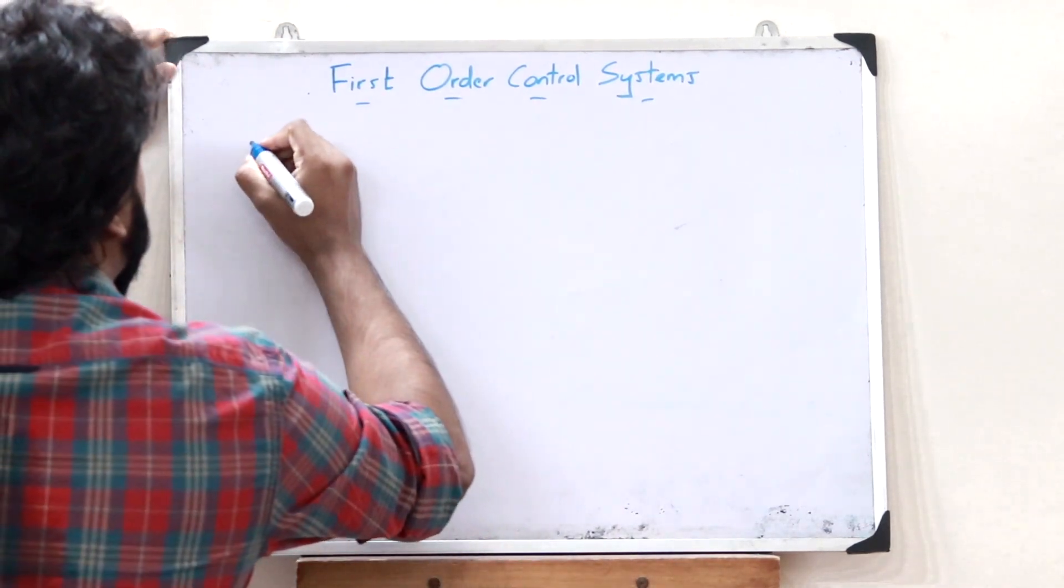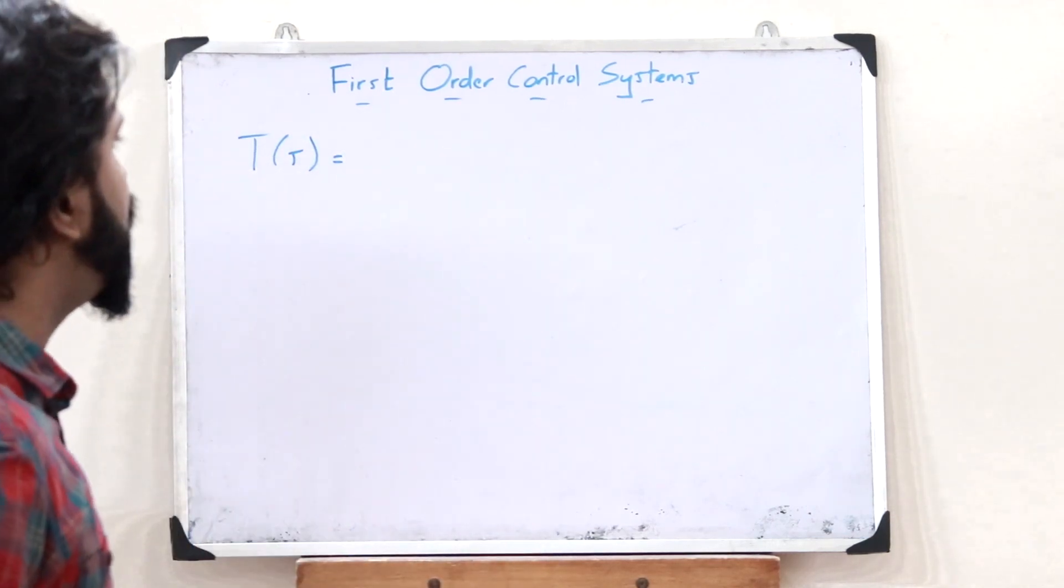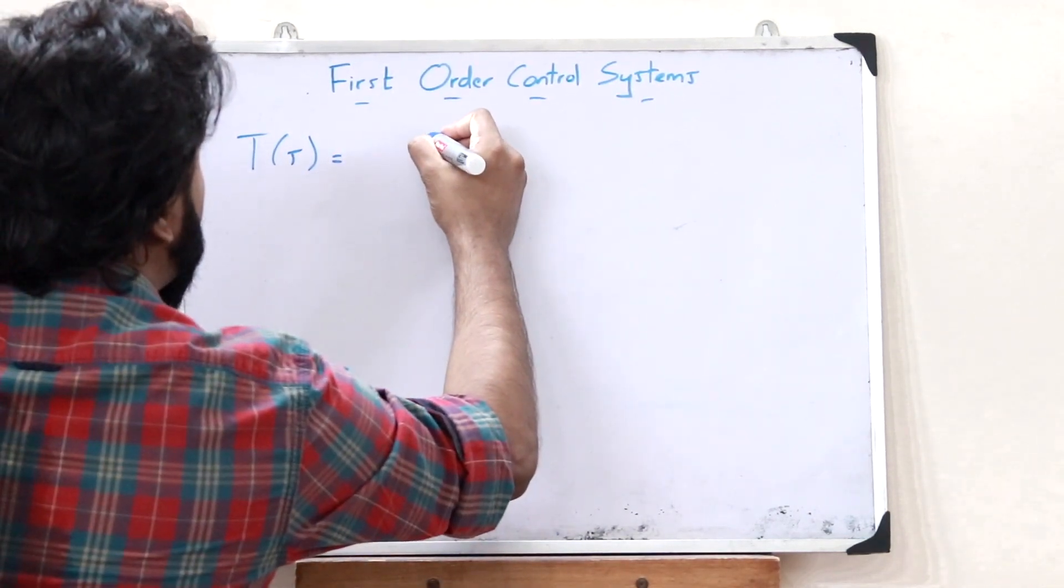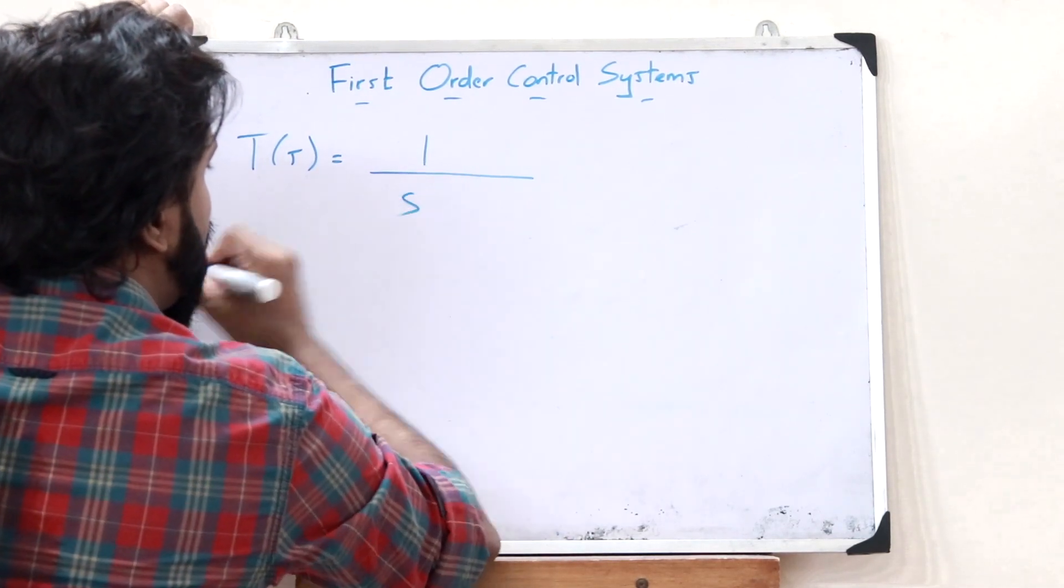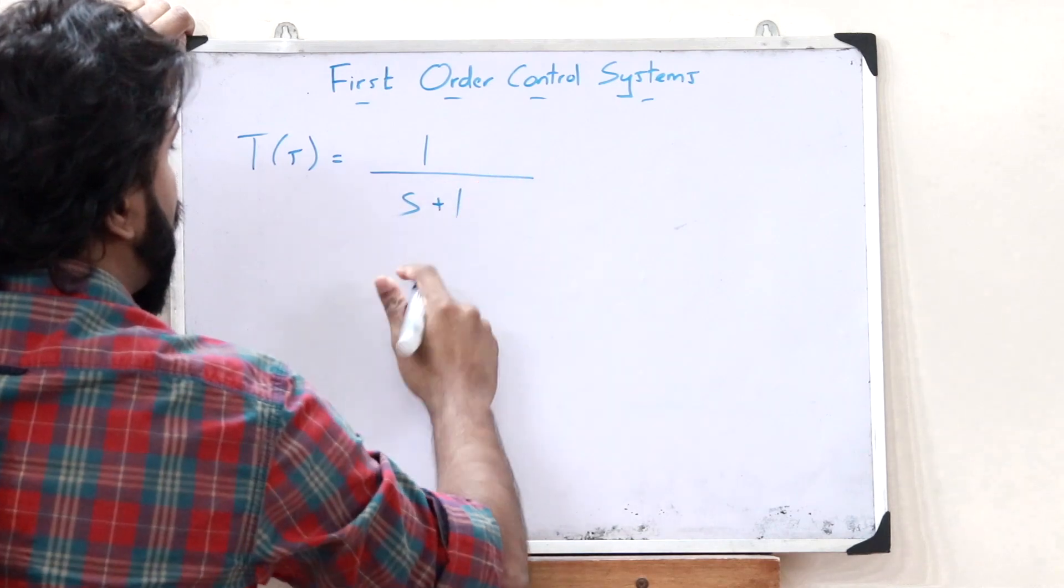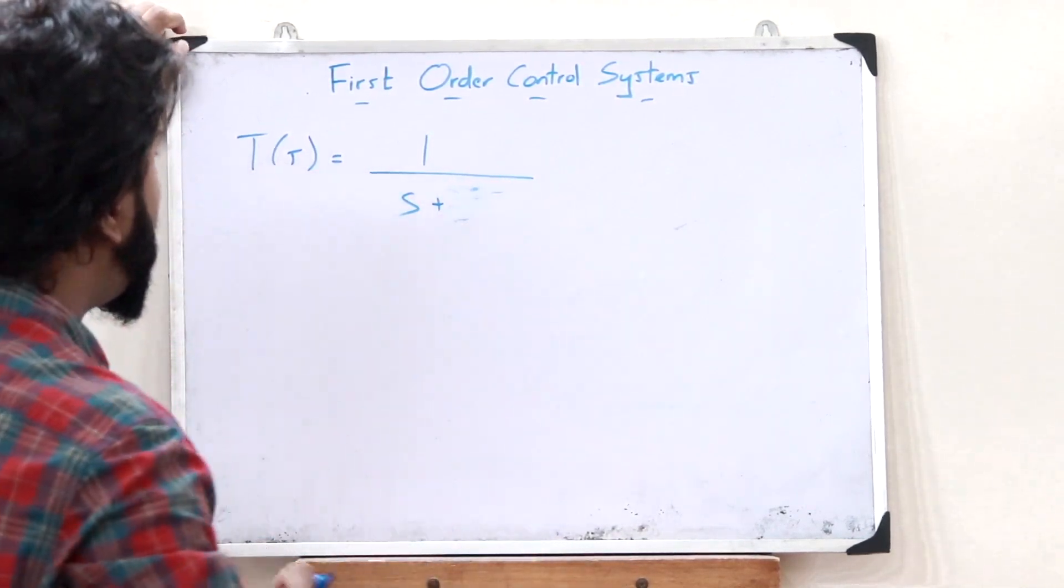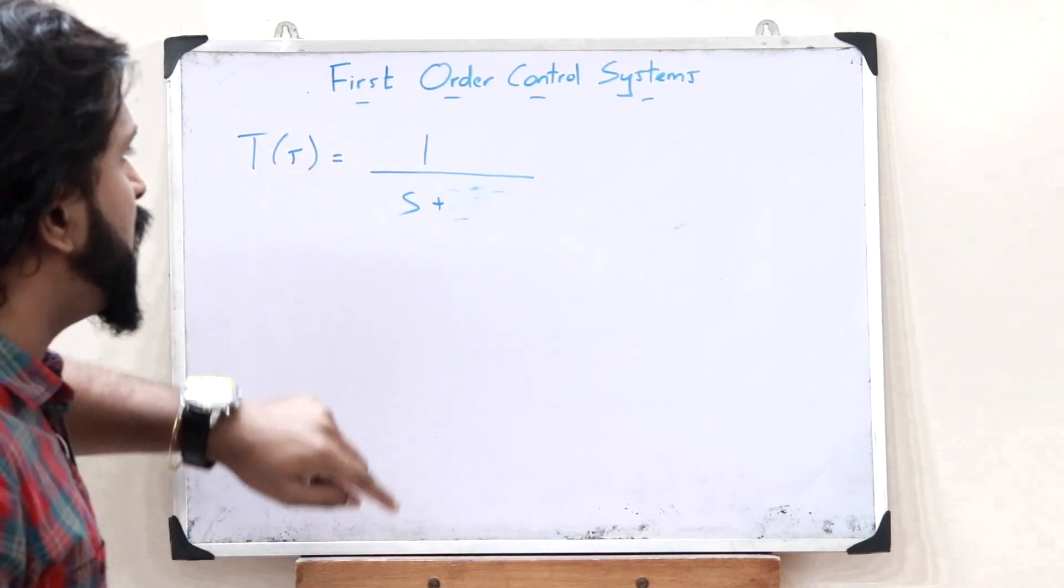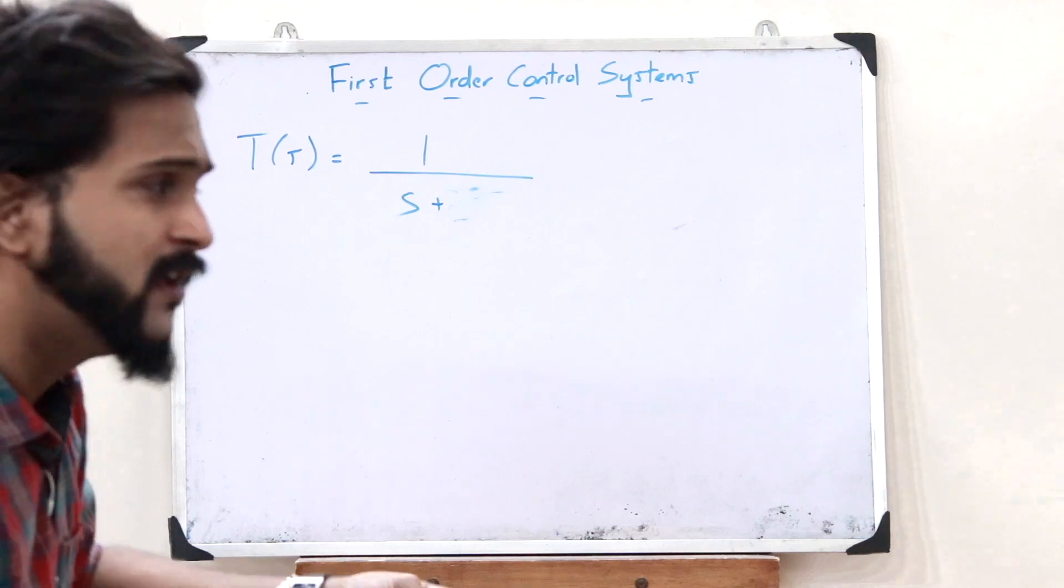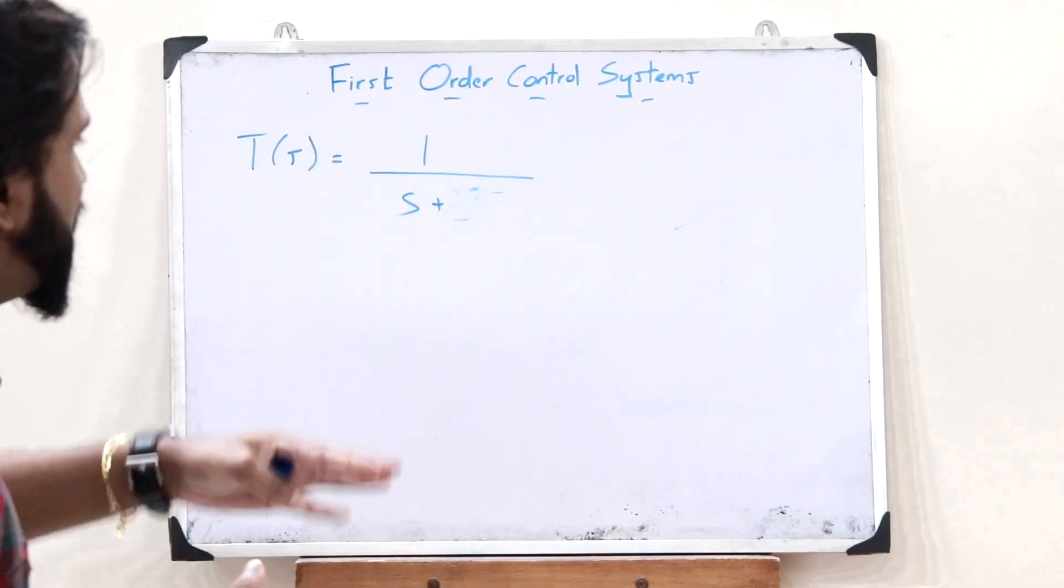That is, if we are given a particular transfer function T of S, then this should have the maximum value of the power of S as 1 in the denominator. Say, maybe S plus 1, or S plus 2, or S plus 5. So, whenever the maximum power of S is 1, it is simply said to be a first-order control system. As simple as that.